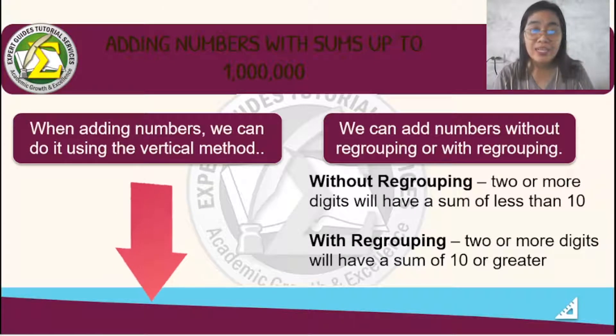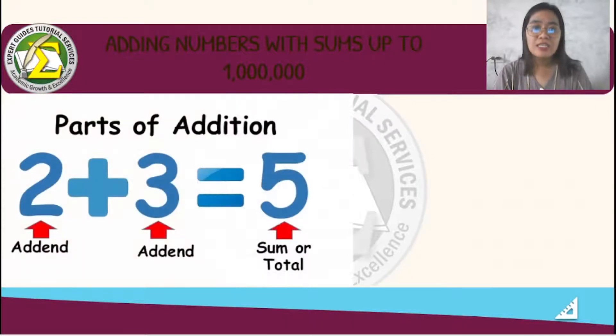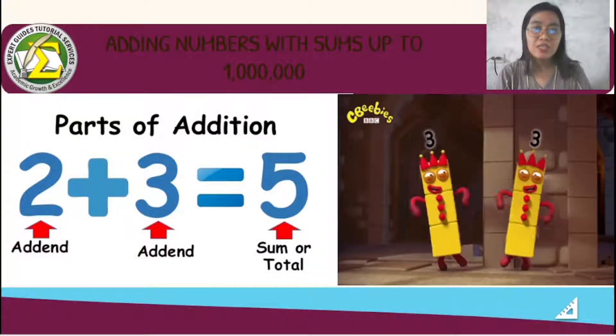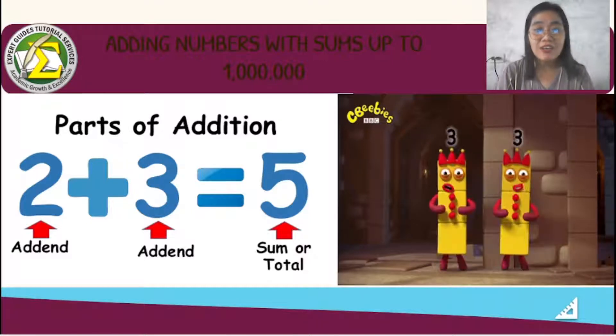So let's talk about the parts of addition. We have 2 plus 3 equals 5. So 2 and 3 are what we call the addends. And then 5, or the answer in addition, is what we call the sum or total.